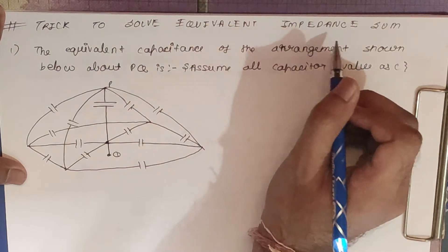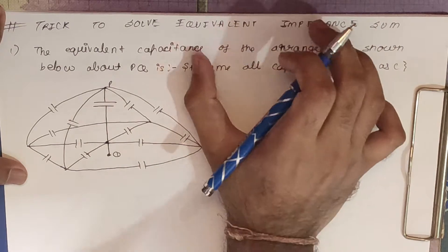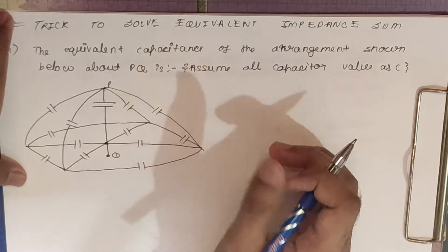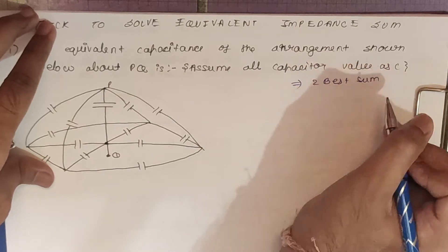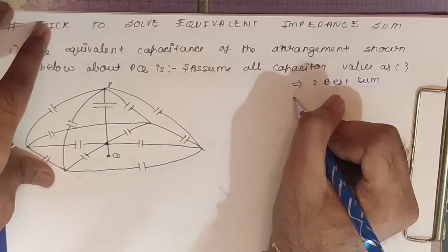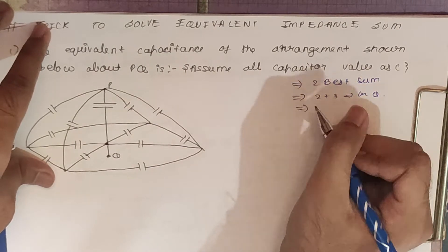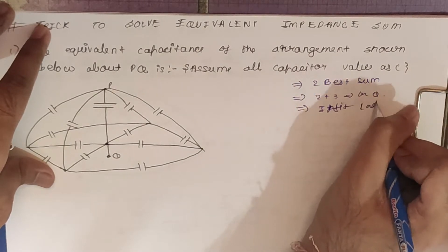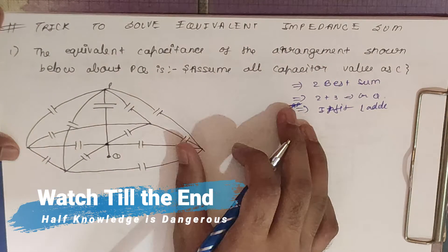Hello friends, today we are going to see the trick to solve equivalent impedance sums. This is different from equivalent resistance — here we are going to see the combination of resistance, capacitance, and inductance. We will cover the two best sums selected by most test series and likely to appear in GATE questions, then two to three actual GATE questions, and finally the infinite ladder impedance.